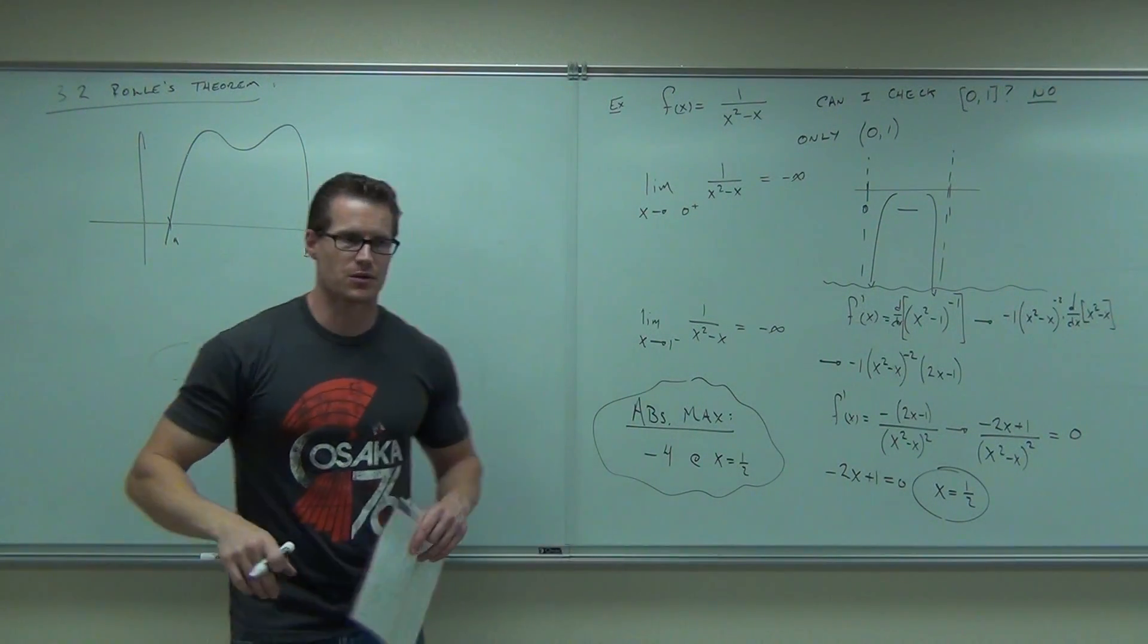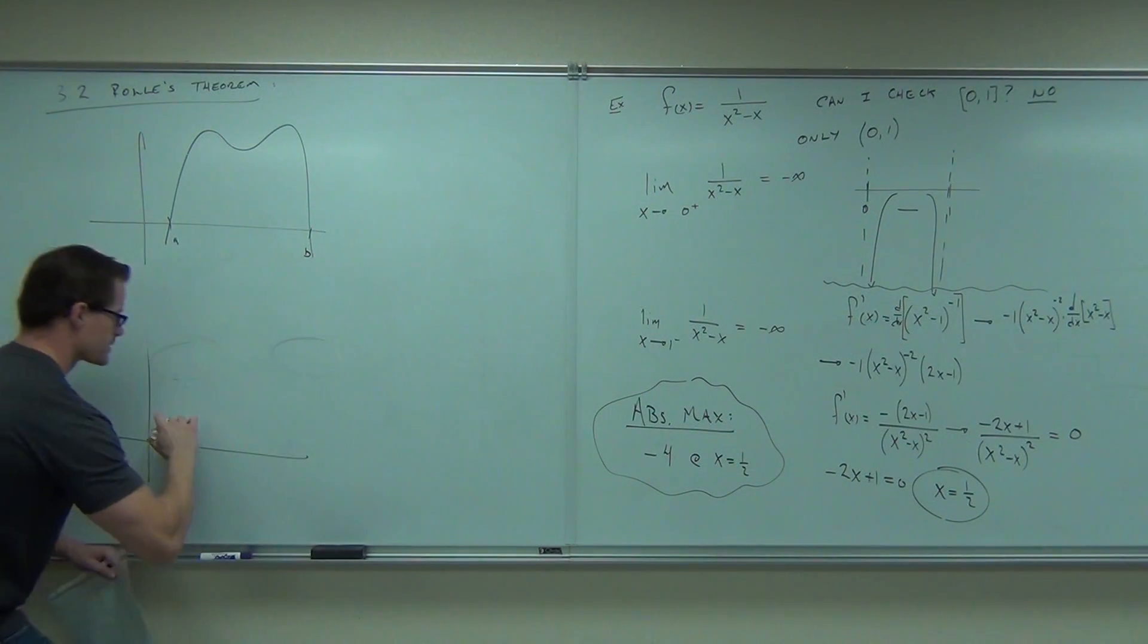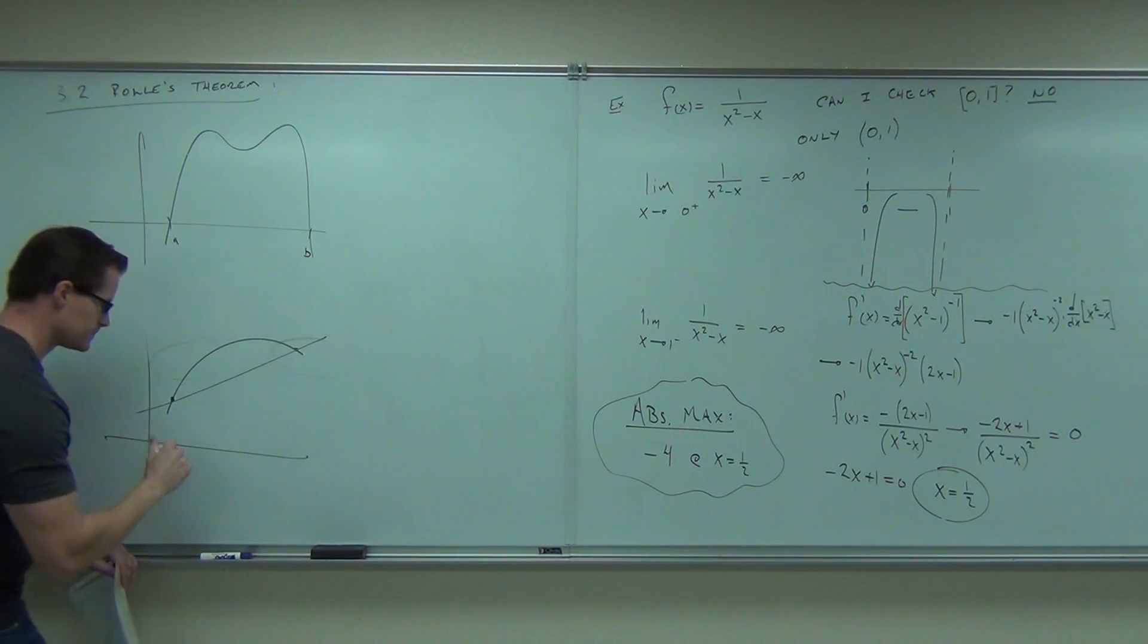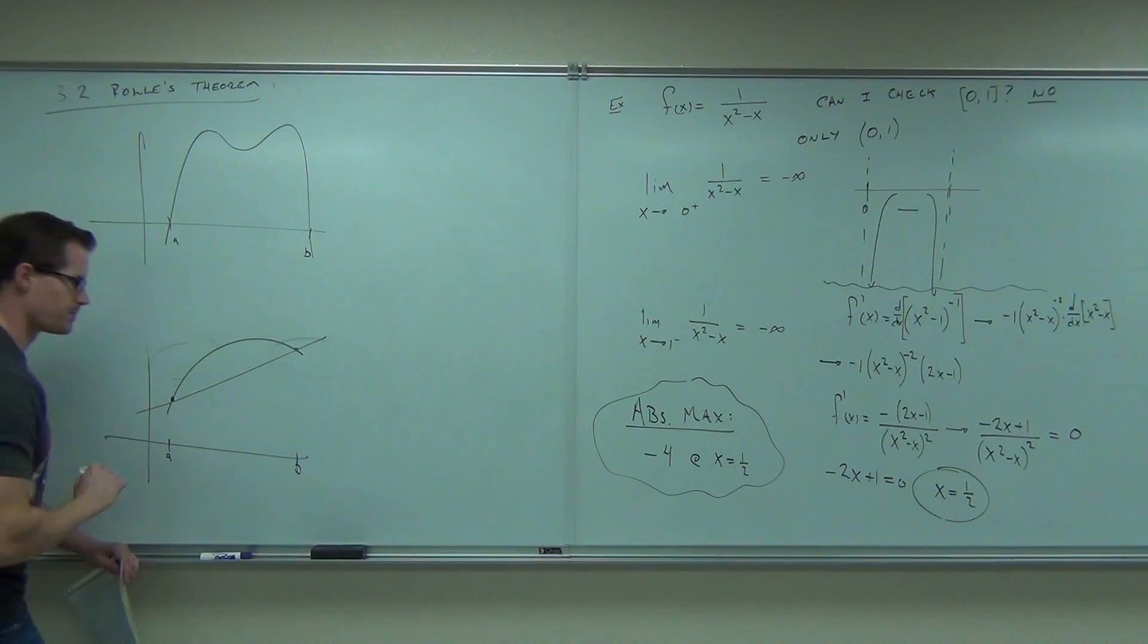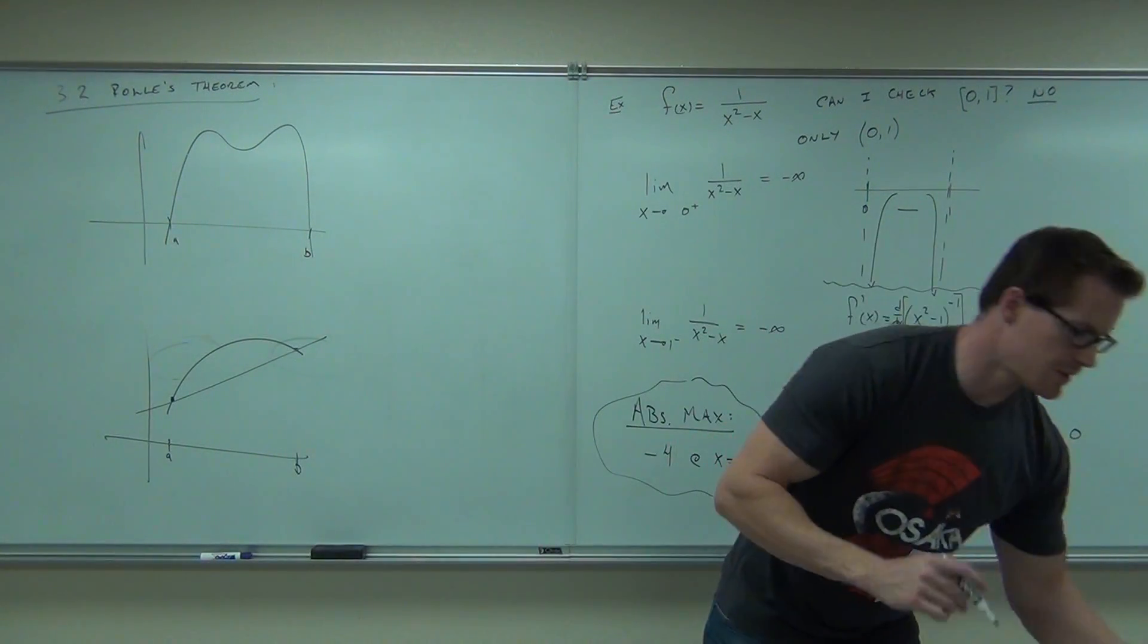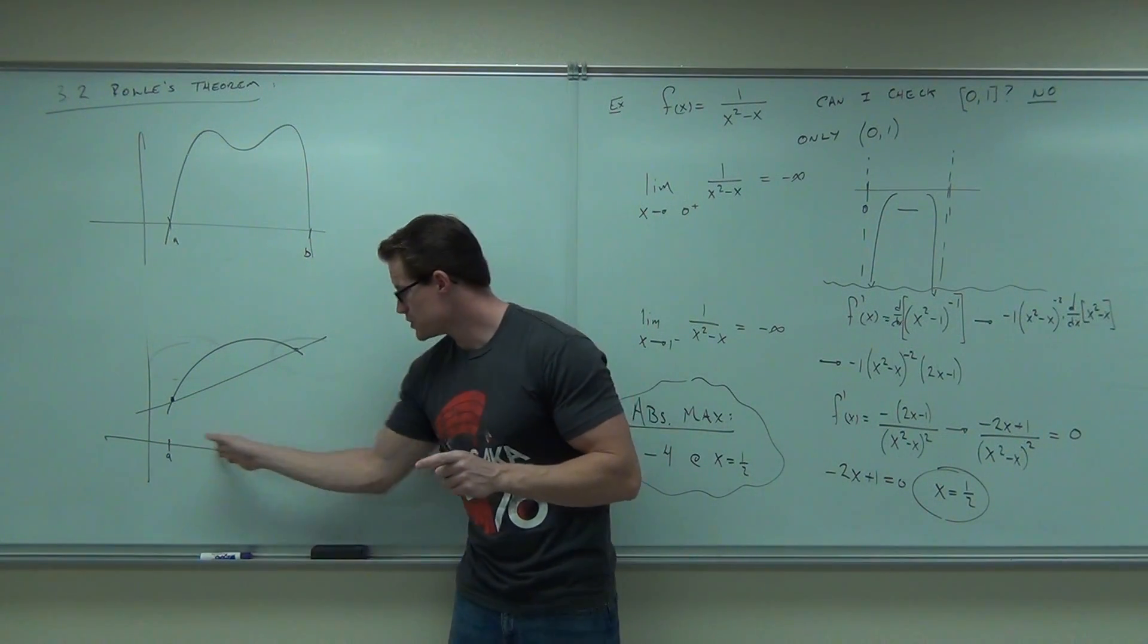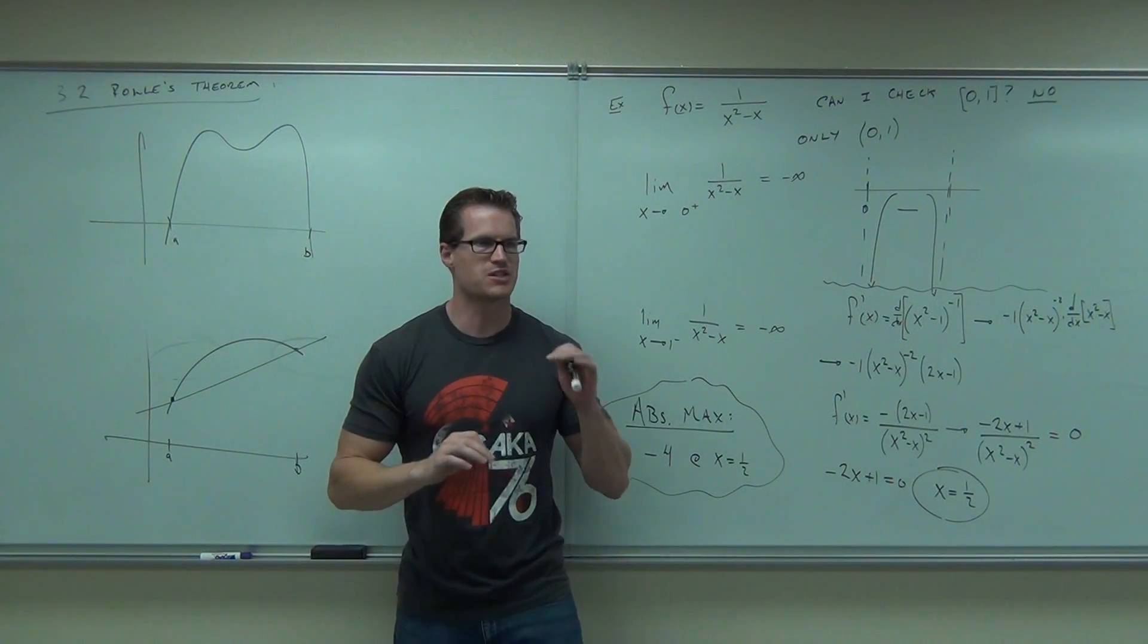I'm going to show you the mean value theorem. The mean value theorem says take two points and draw a secant. A, B. Would you agree that that secant line is going to have a slope? Okay. Tell me something between these two points. If this is continuous, actually let me make it stronger, if it's differentiable.